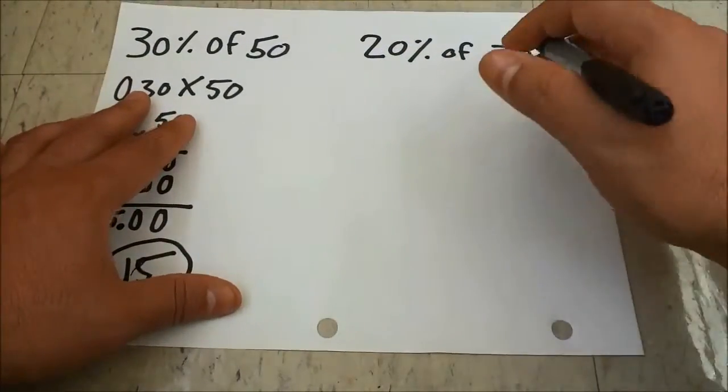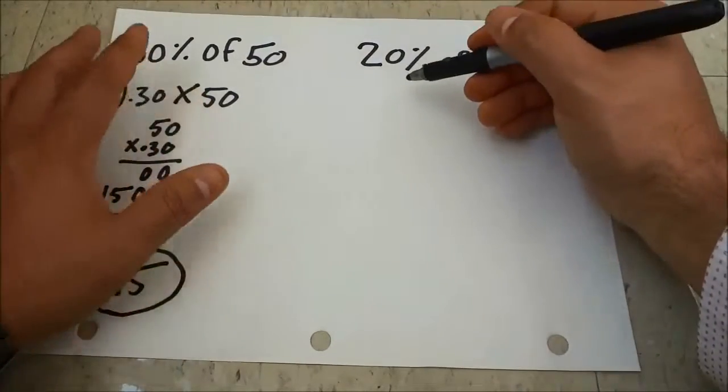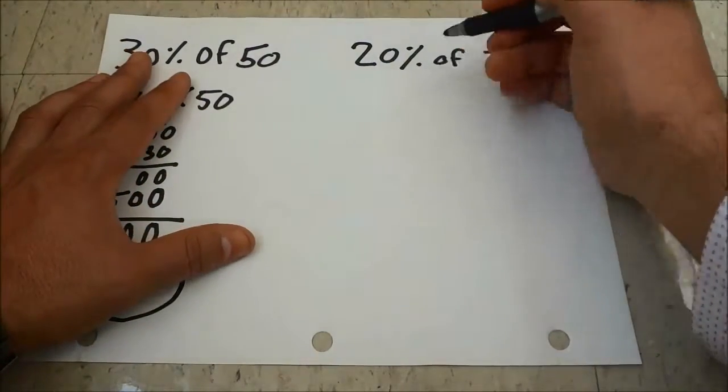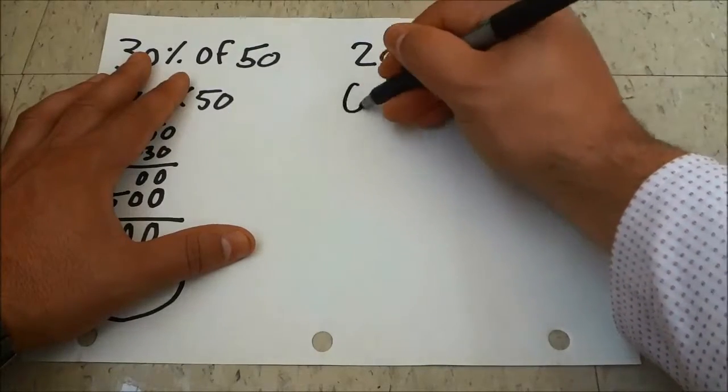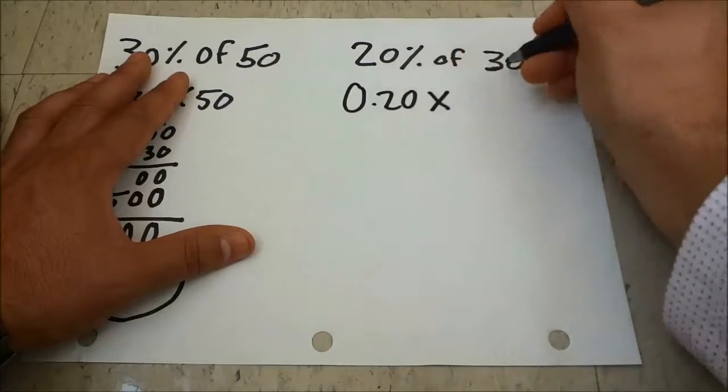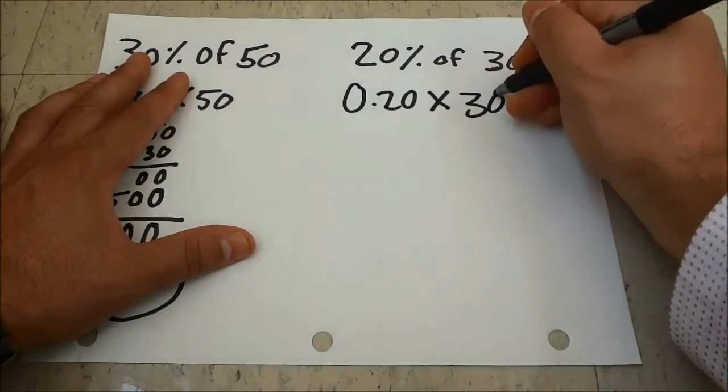I'm going to go ahead and do the same thing with another example. For this one, I will be doing 20% of 30. Once again, I have to convert the 20% to a decimal which would be 0.20, and multiply it by the second number, which is 30.